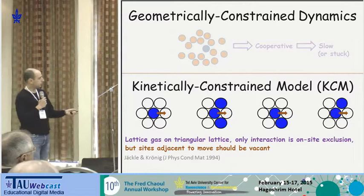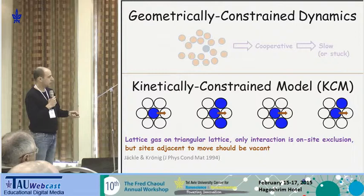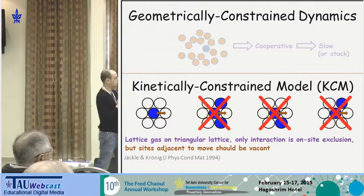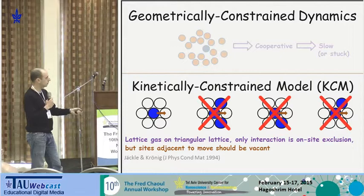The way we describe this physical mechanism is using simple lattice models called kinetically constrained models. For example, imagine particles restricted to live on a spatial lattice. The kinetic constraint allows a particle to move to a neighboring lattice site only if some kinetic constraint is satisfied. In particular, in the two-dimensional triangle lattice, we prohibit a move if the gap is too small for the particle to pass through — so a particle can only move to the right if two adjacent sites are vacant.